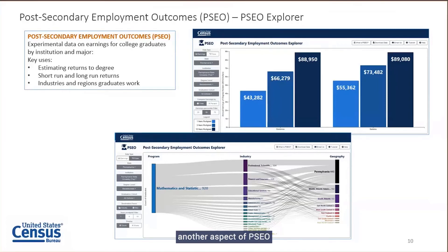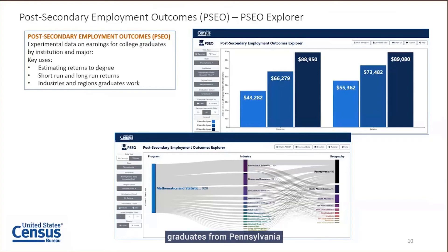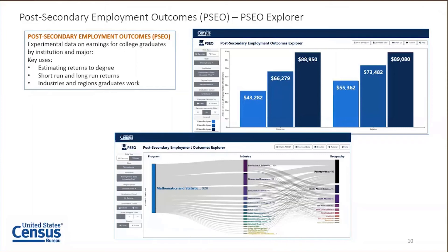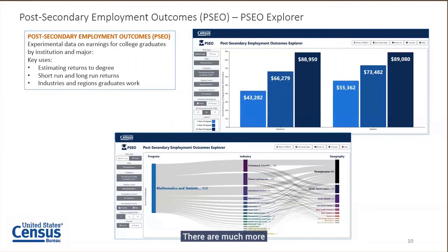Ten years post-graduation, individuals with economics degrees and statistics degrees are essentially equivalent in earnings capacity. Another unique aspect of PSEO is the geographic distribution of graduates. Mathematics and statistics baccalaureate graduates from Penn State show varied industry composition and geographic distribution. Roughly less than half of graduates stay in Pennsylvania one year post-graduation, and we can track geographic dispersion at one year, five years, and ten years post-graduation.